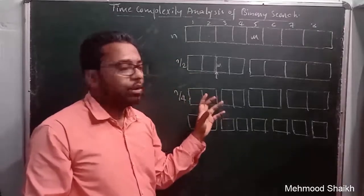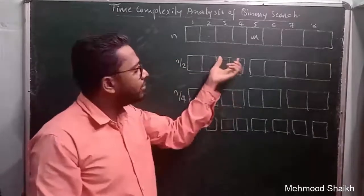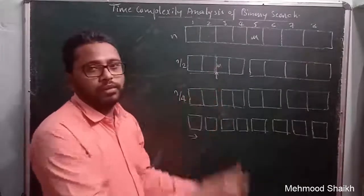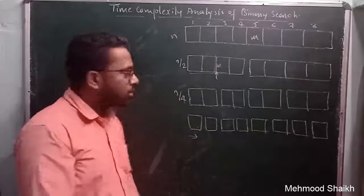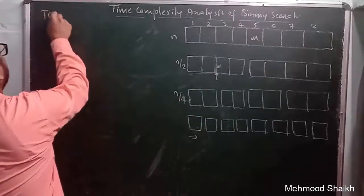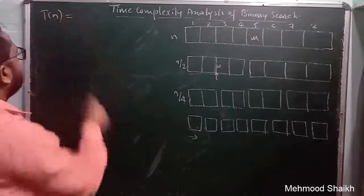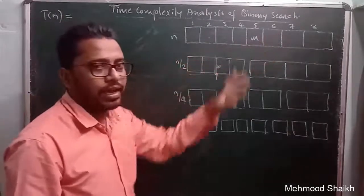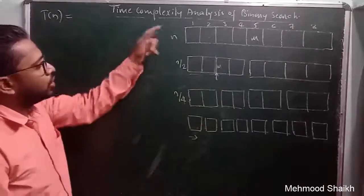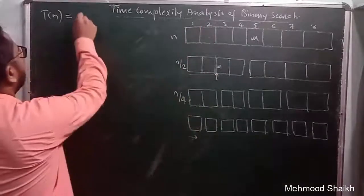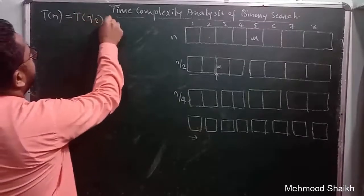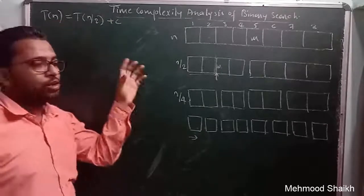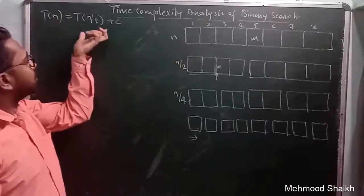Now we calculate the time required for binary search. We define T(n) as the time taken to perform binary search on a problem of size n, which equals T(n/2) plus a constant c. T(n/2) is the time to search on a problem of size n/2.